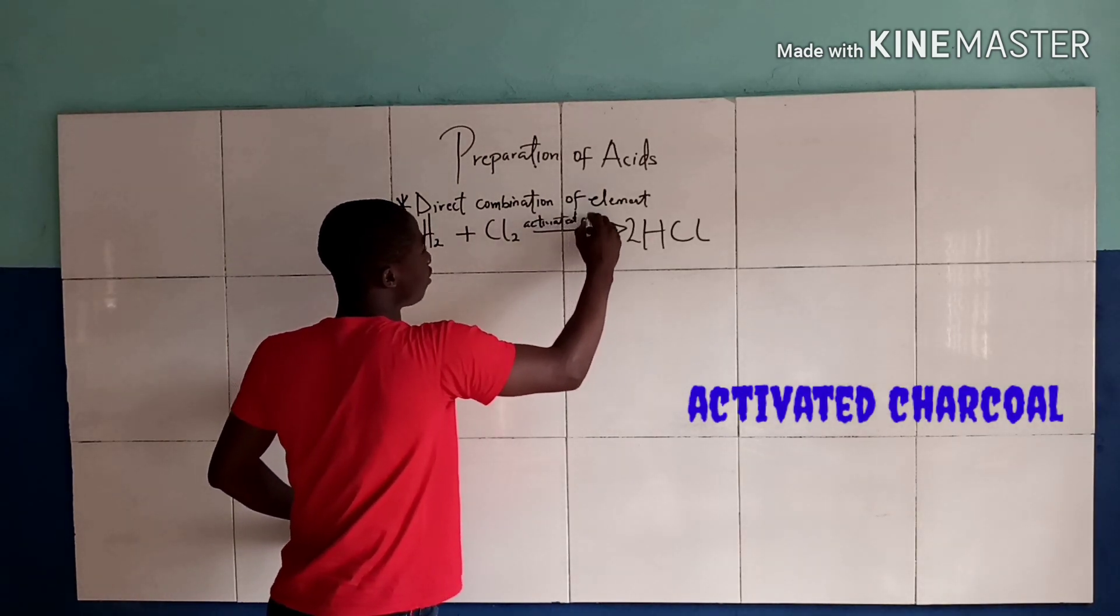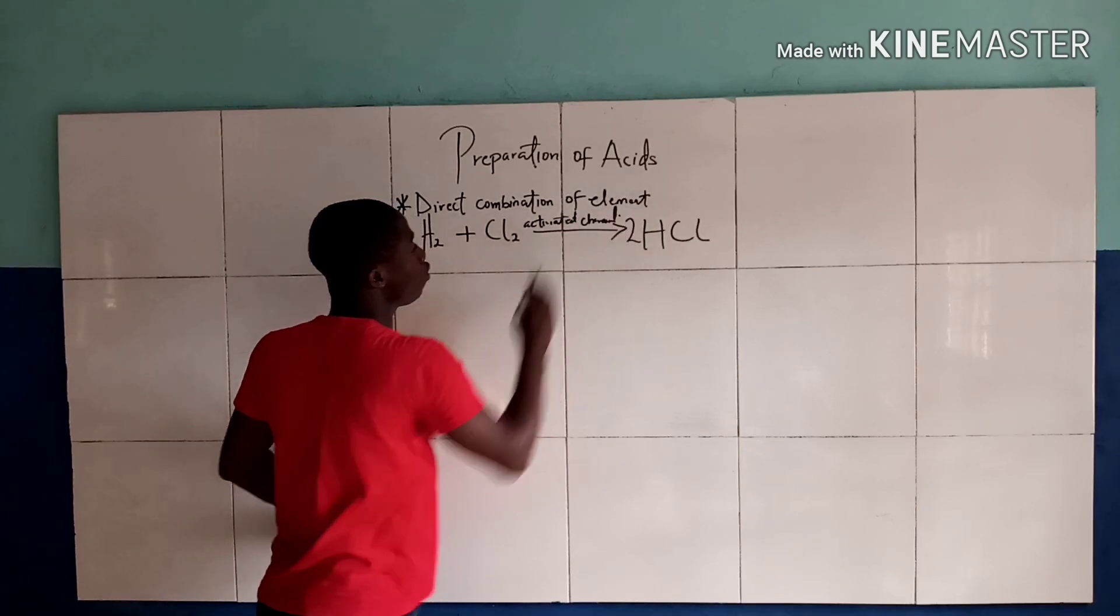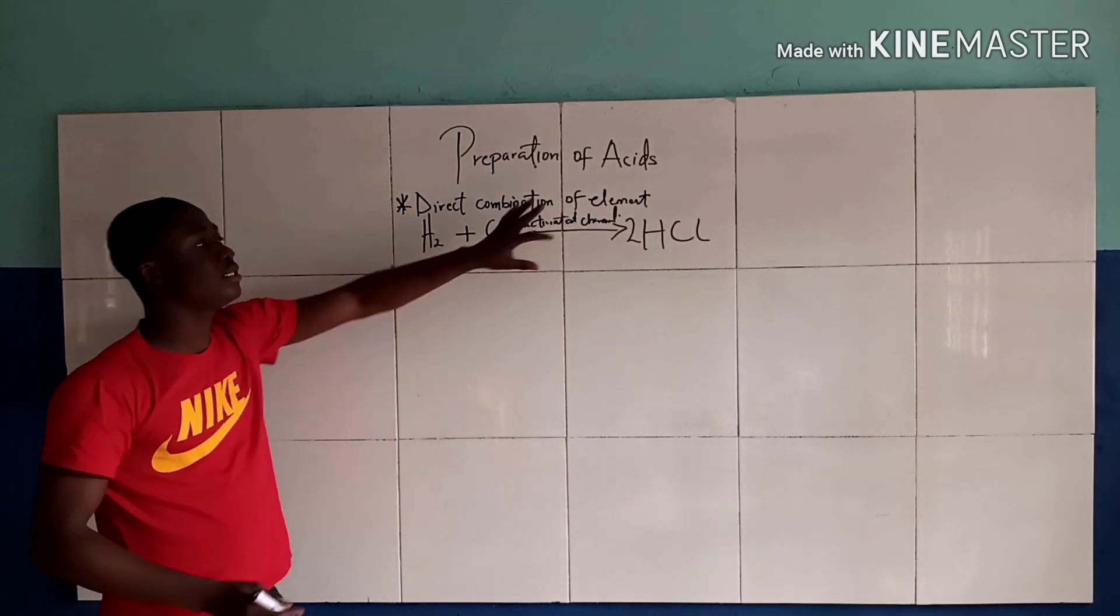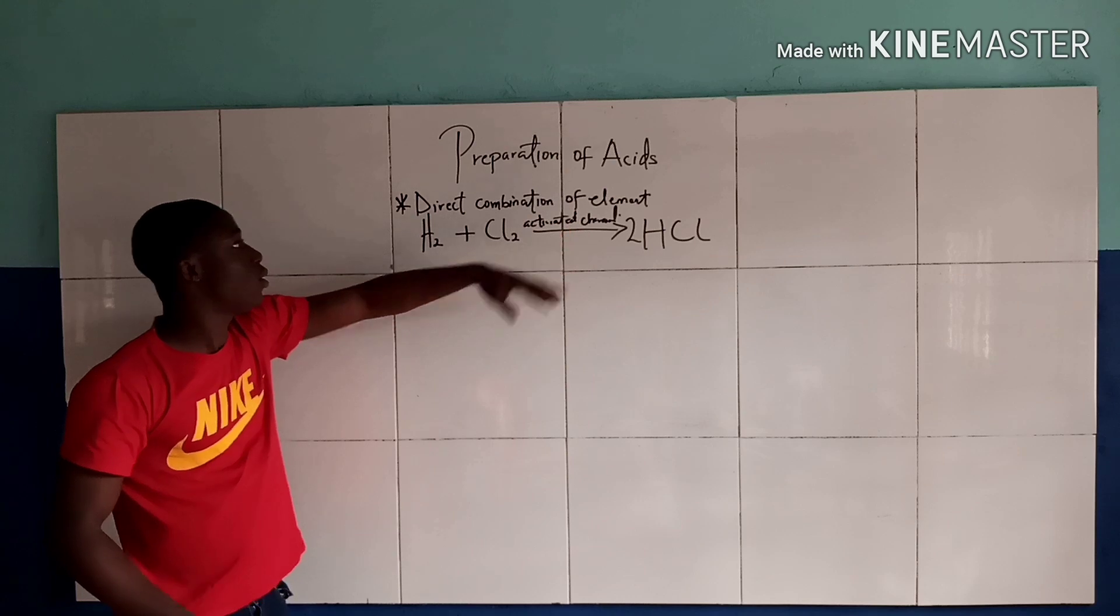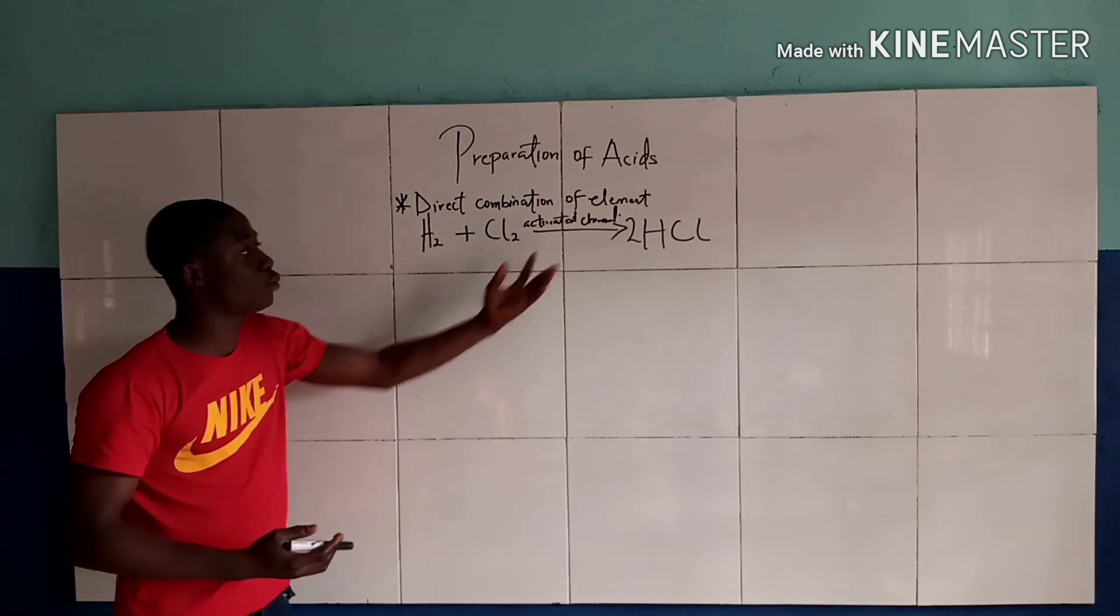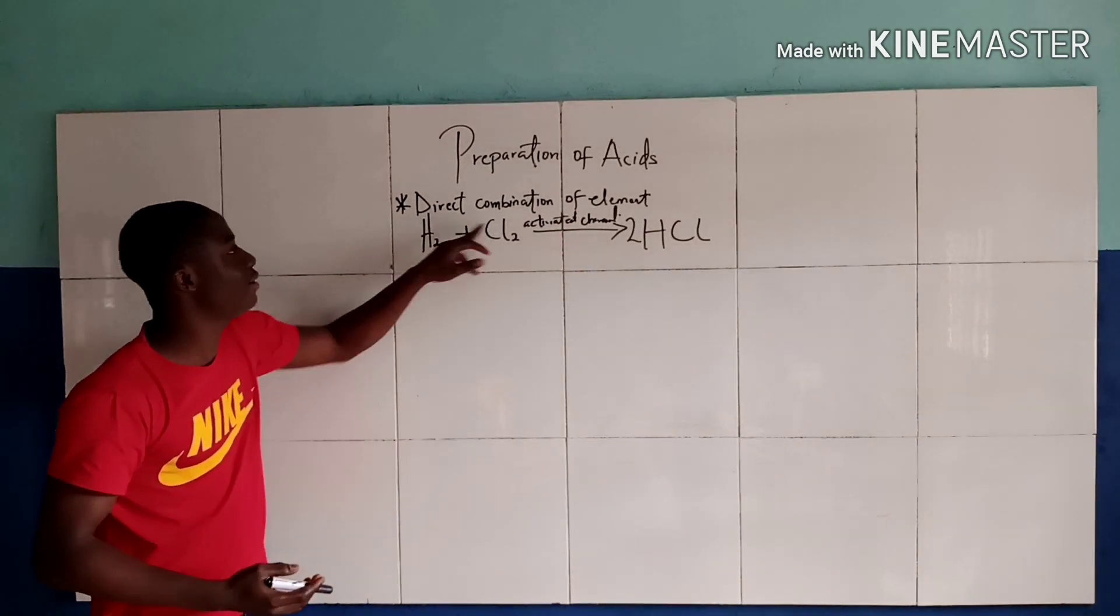So this is the first process or method of producing an acid by direct combination of the elements.